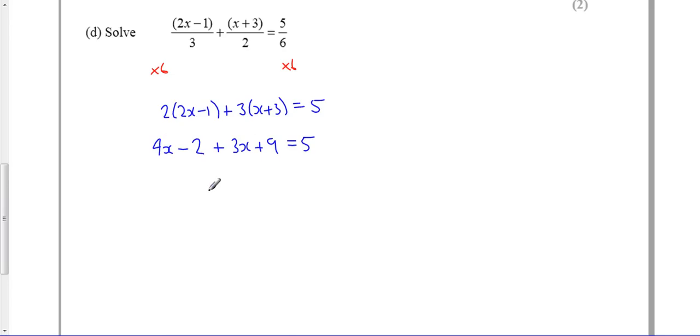So 4 and 3 make 7x, 9 minus 2 makes plus 7 equals to 5. Then I'm going to take away 7 from both sides.